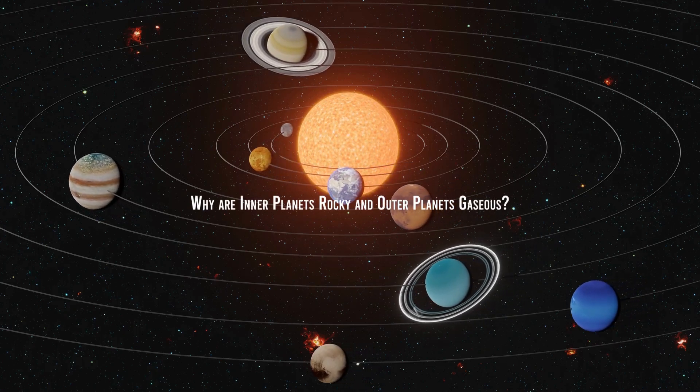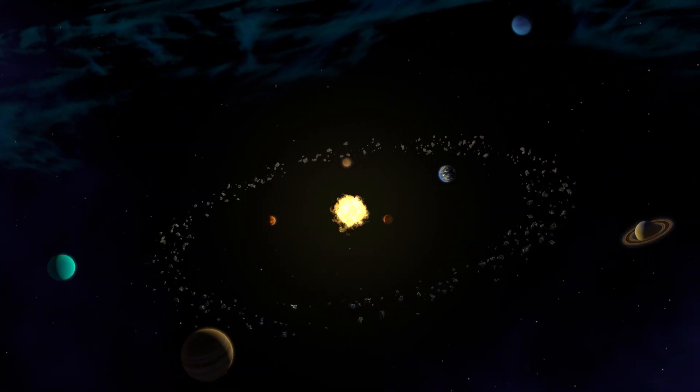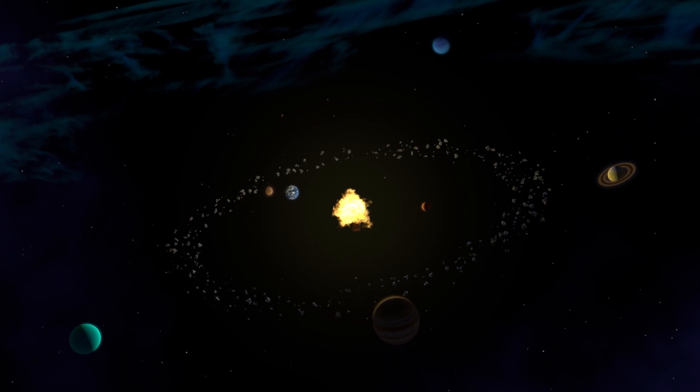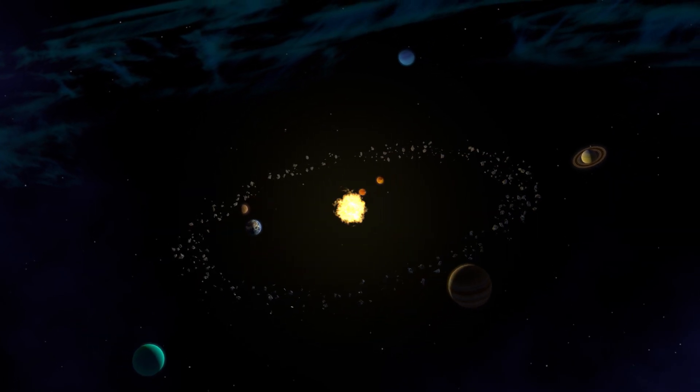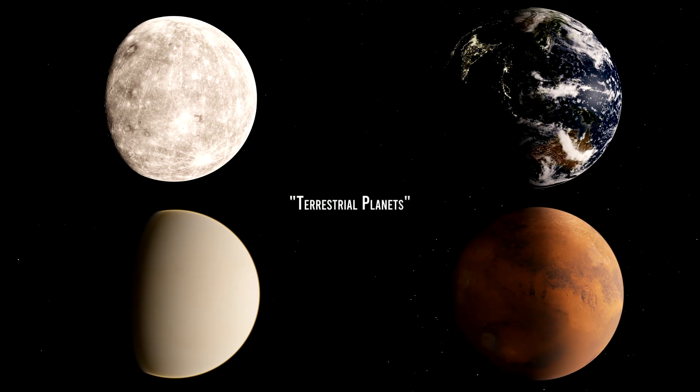Why are inner planets rocky and outer planets gaseous? We all know the solar system contains two kinds of planets. The first four, Mercury through Mars, are quite small in size, and they are rocky planets, also called terrestrial planets.